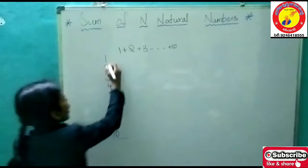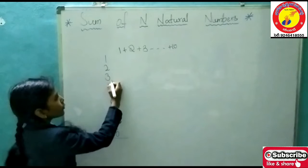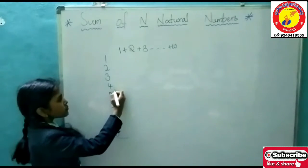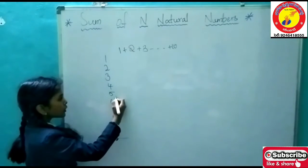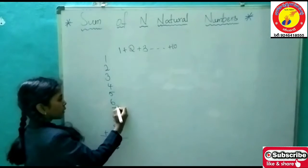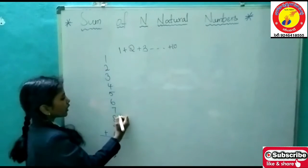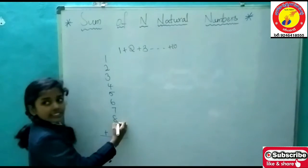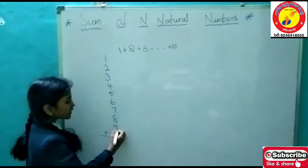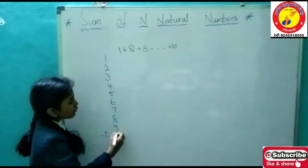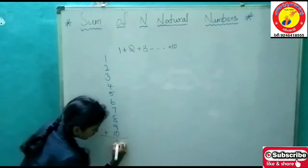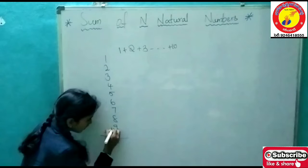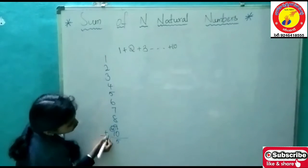So let's find the sum. 1 plus 2 is 3. 3 plus 3 is 6. 6 plus 4 is 10. 10 plus 5 is 15. 15 plus 6 is 21. 21 plus 7 is 28. 28 plus 8 is 36. 36 plus 9 is 45. 45 plus 10 is 55.